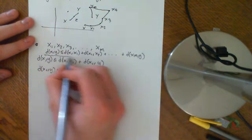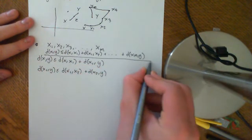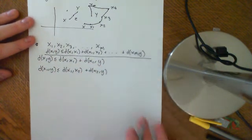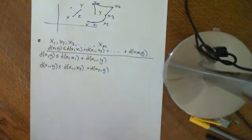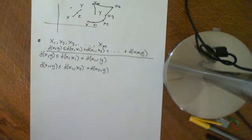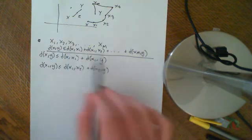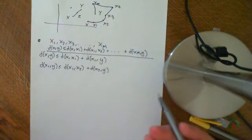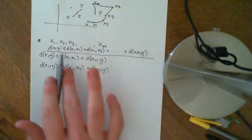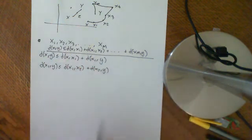That's the generalisation of the triangle inequality: if you take a finite number of points between x and y, then the distance between x and y is less than or equal to the distance between x and x1, plus the distance between x1 and x2, all the way up to plus the distance between xm and y. That's what we want to prove.